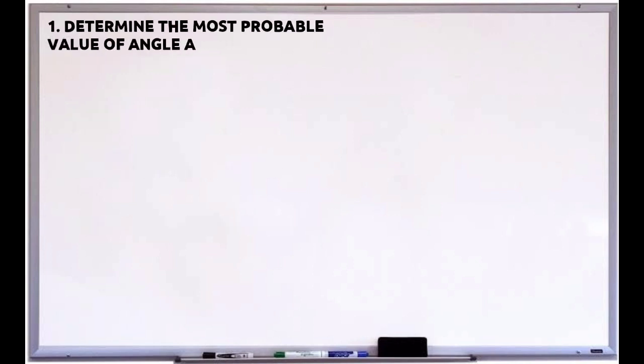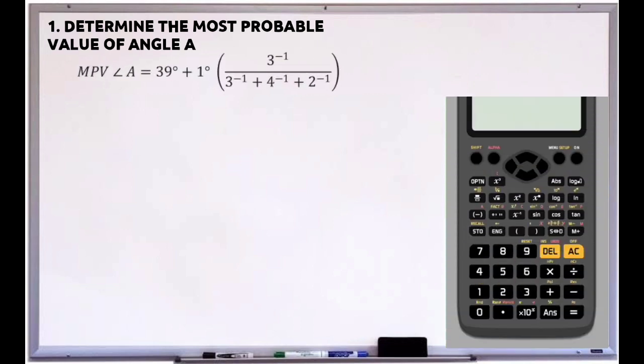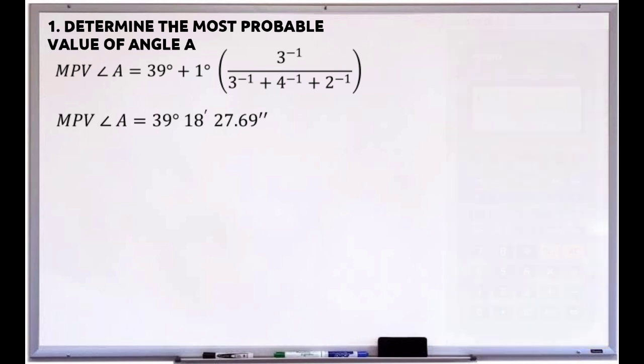The first question is: determine the most probable value of angle A. The most probable value of angle A equals 39 degrees 18 minutes 27.69 seconds.